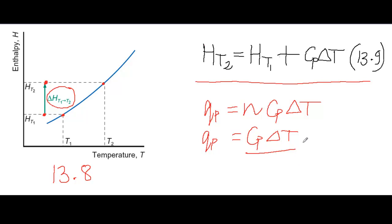And this gives us equation 13.9. The enthalpy at temperature T2 is the enthalpy at temperature T1 plus CP times delta T. And this is all for one mole.